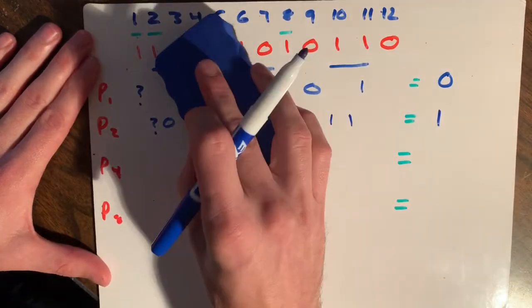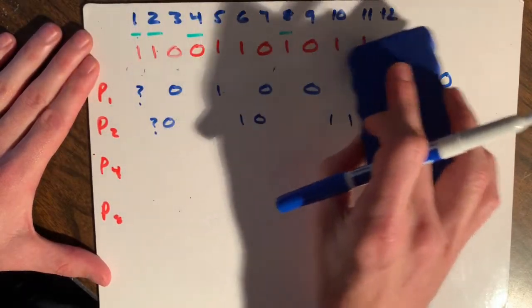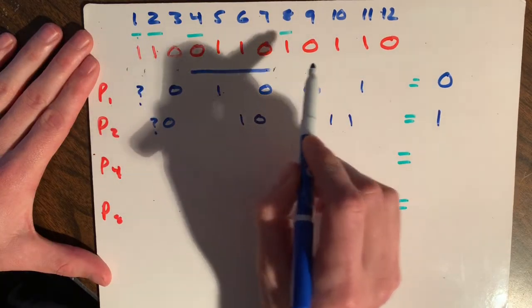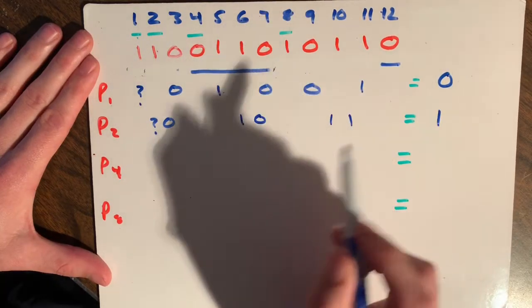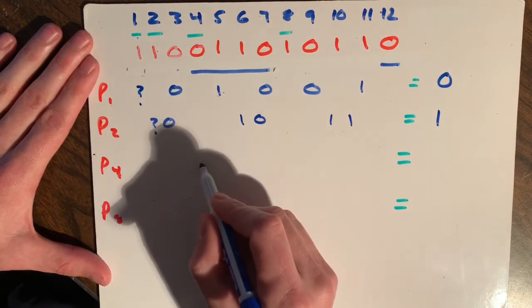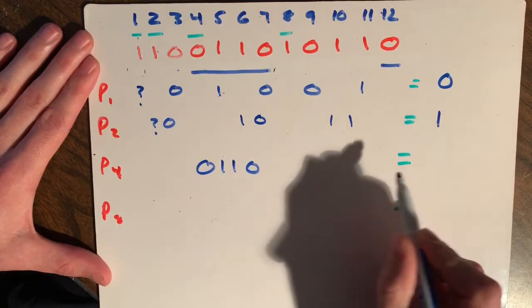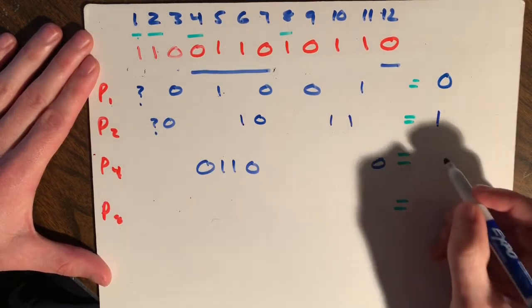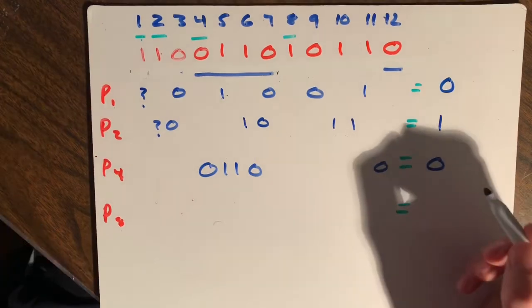For parity bit four, same thing, we're going to check four and skip four. So we're going to start right here, skip four, and there's one trailing at the end there. So it looks like we just have zero, one, one, zero, and then another zero way down here. Two ones is even, so we're going to put a zero there.